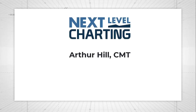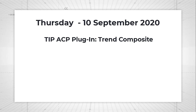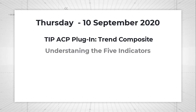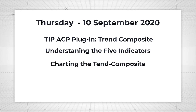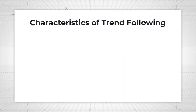Hey, this is Arthur Hill, Chief Technical Strategist at TrendInvestorPro.com. You are tuned in to Next Level Charting. Today we're going to go over the Trend Composite indicator, it's part of the ACP plugins available at StockCharts. We've got five indicators and I'm going to show you how to chart these indicators and what they're telling us, and how to chart the trend composite and the signals that it generates.